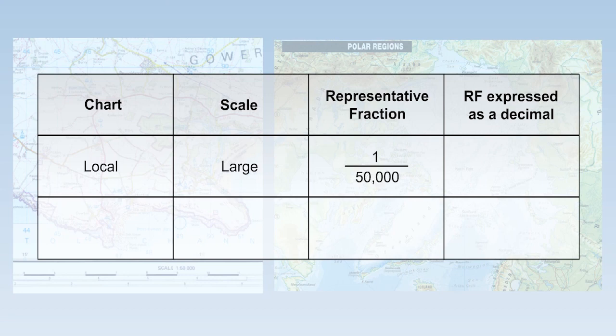The local large scale chart has a scale of 1 to 50,000. A typical polar navigation chart has a scale of 1 to 5 million. At first sight, it seems as though 5 million is the larger figure. But this is the denominator in a fraction. A fraction of 1 to 50,000, expressed as a decimal, is 0.00002.